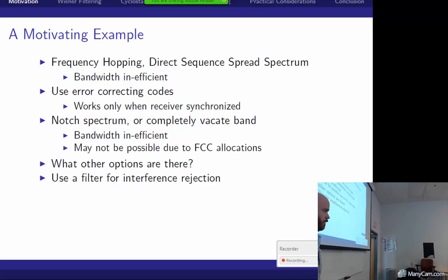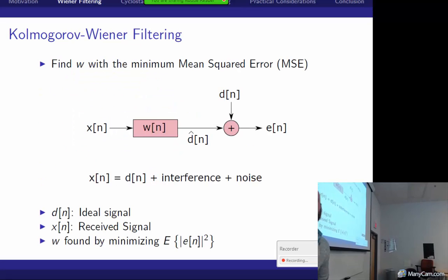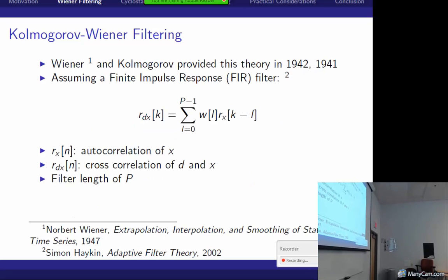So one way is you can use a filter to get rid of that interference. So the first way you can start is you say, let's pick a filter W, and we'll figure out what those optimal filter coefficients should be if I minimize the mean squared error. So D is my ideal signal or desired signal, and I have, on top of that when I receive it, interference and noise. So if you go through this, you get the work from, I think it's Kolmogorov, I don't know how to pronounce it, and Wiener.